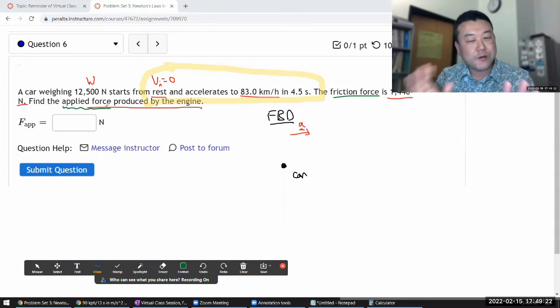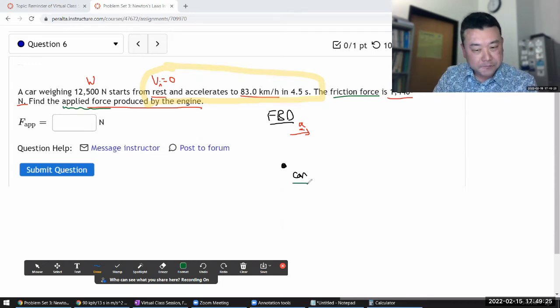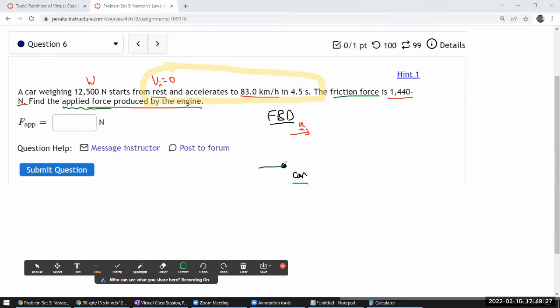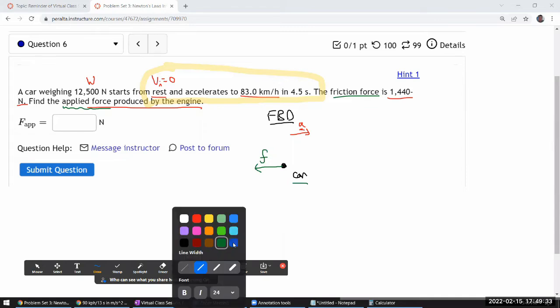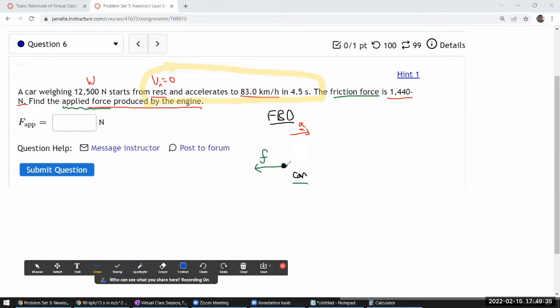Let me just ignore that portion because when it's talking about applied force, I think the question wants me to consider this picture. I have a car. There's some kind of a backward force. I'm just going to call that friction force. And there's another force that I'm going to choose to label as an applied force. And the way the question is worded, it's simply asking me, what is this applied force?